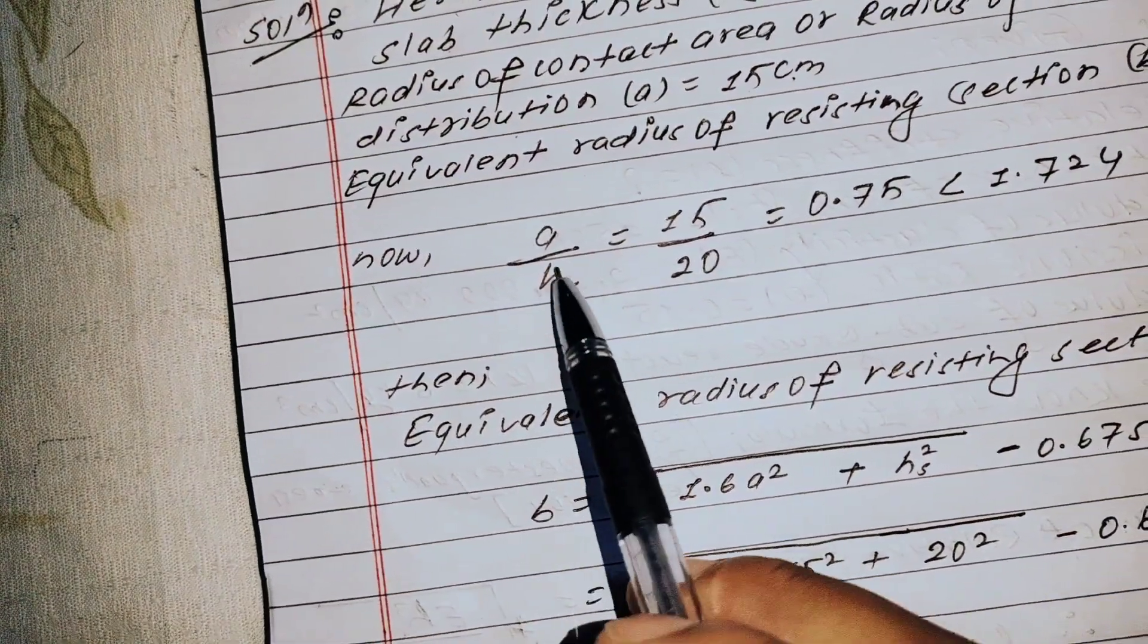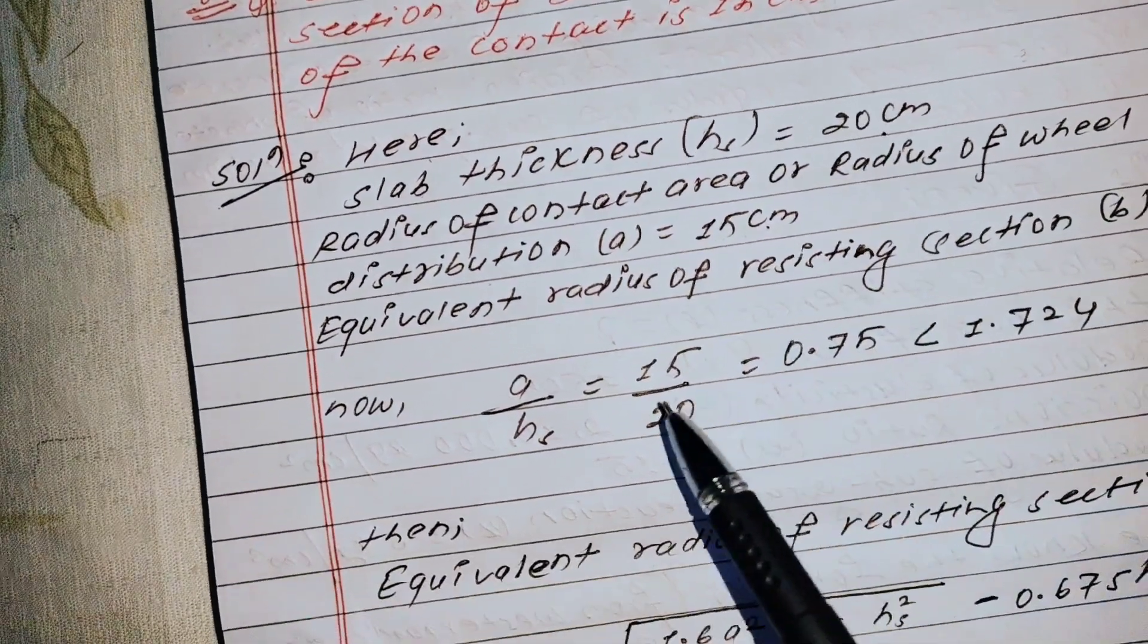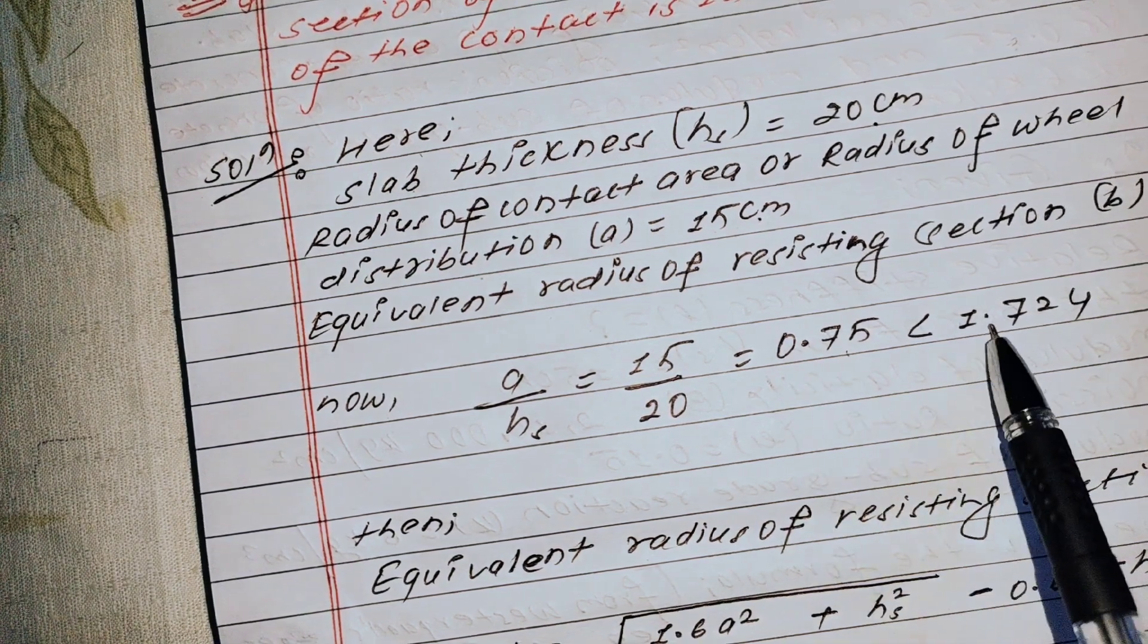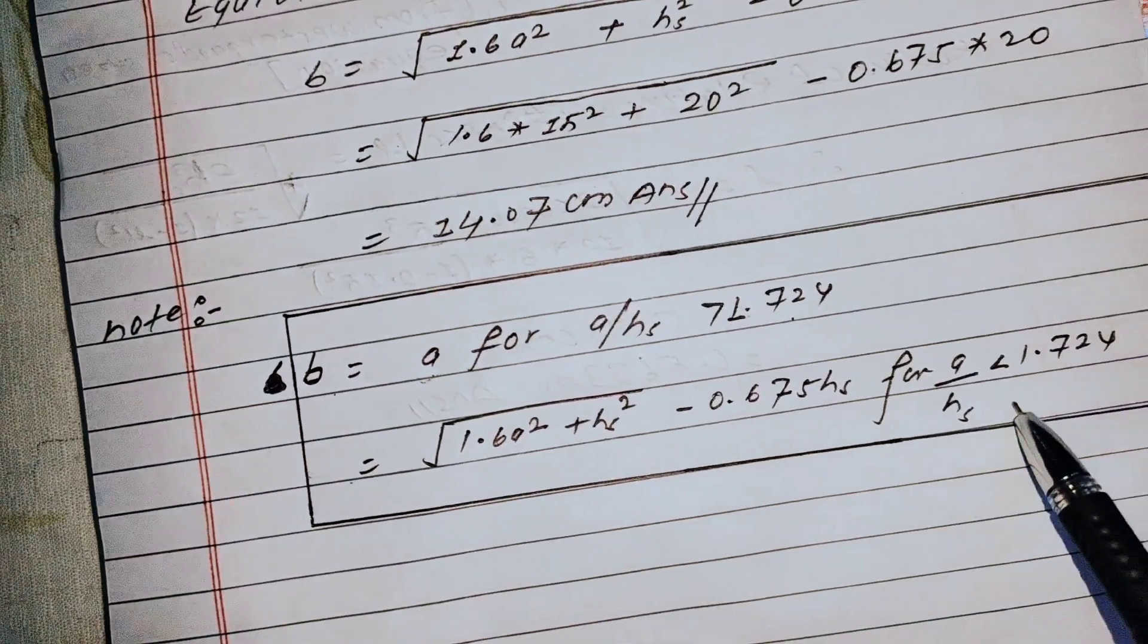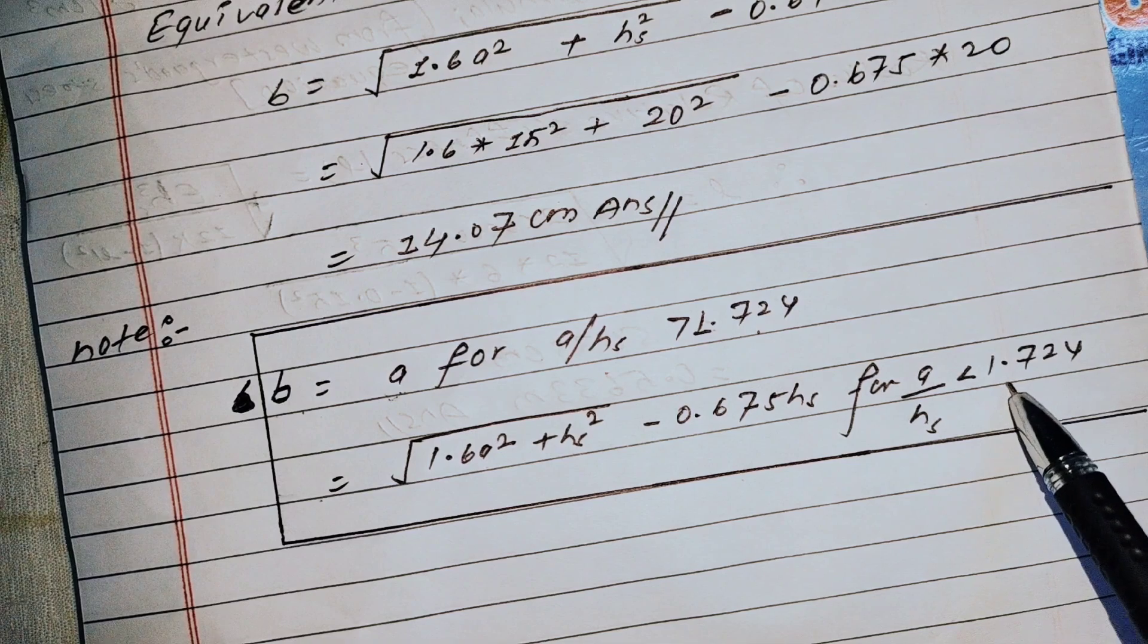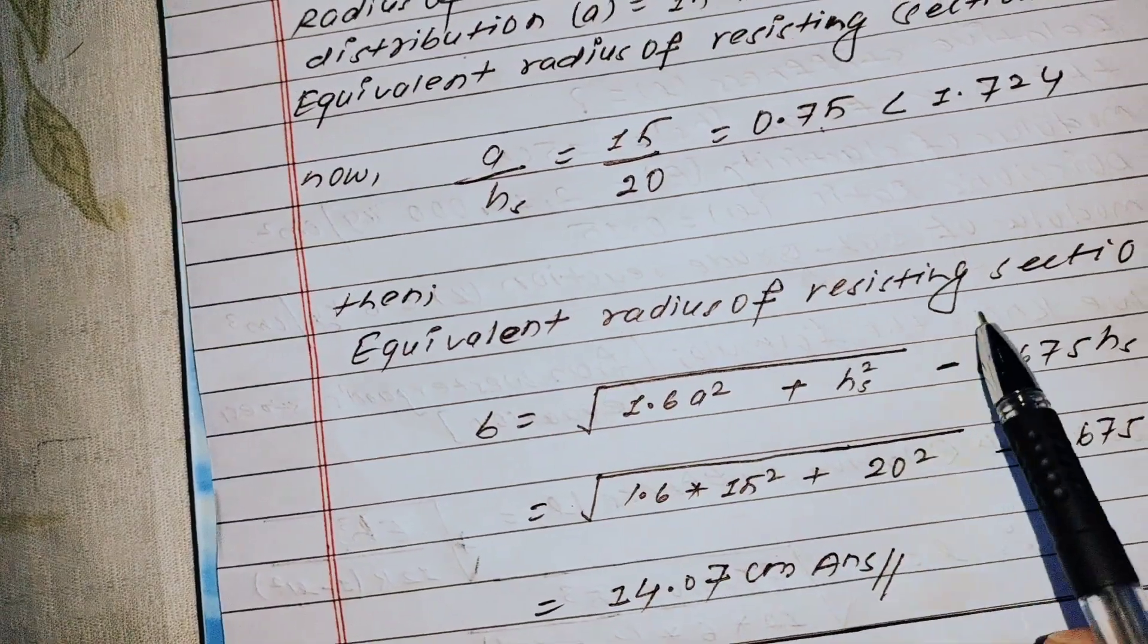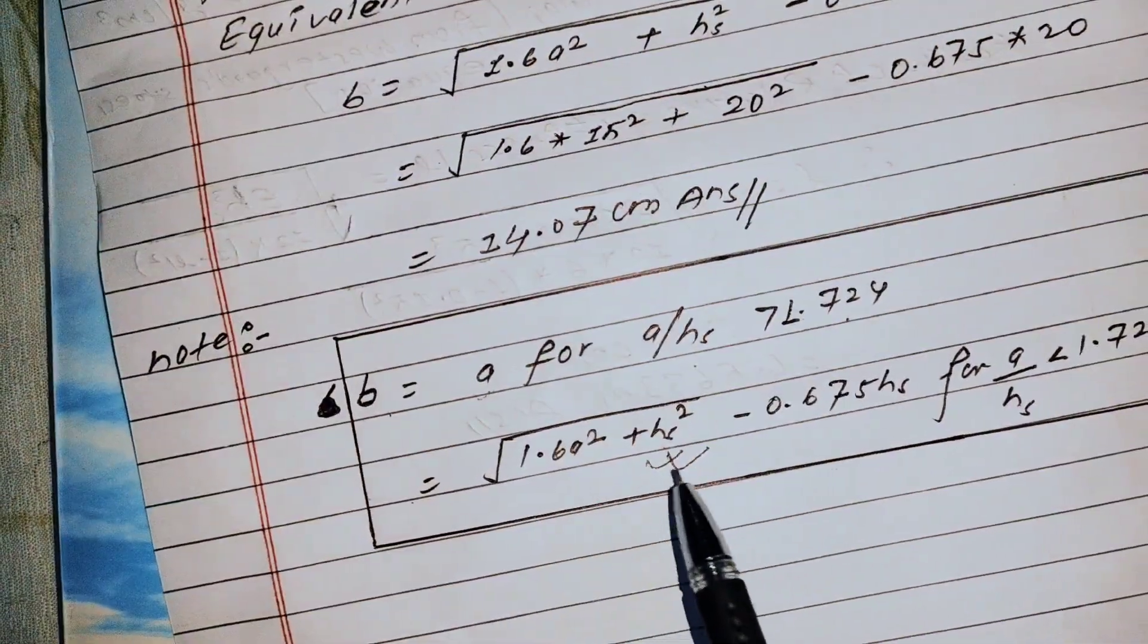First, calculate the a/h ratio. a is given as 15 centimeters, h is 20 centimeters. The ratio is 15/20 = 0.75, which is less than 1.724. So we use the second formula for equivalent radius of resisting section.